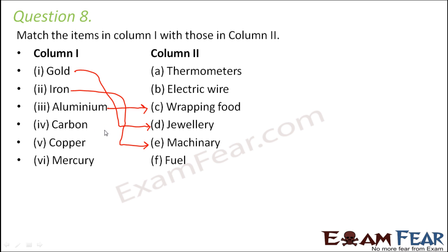Carbon is used as a fuel - coal is an excellent fuel and is made up of carbon. Copper is used in electric wires because they are good conductors of electricity. Mercury is the only metal which is liquid and it is present in thermometers.